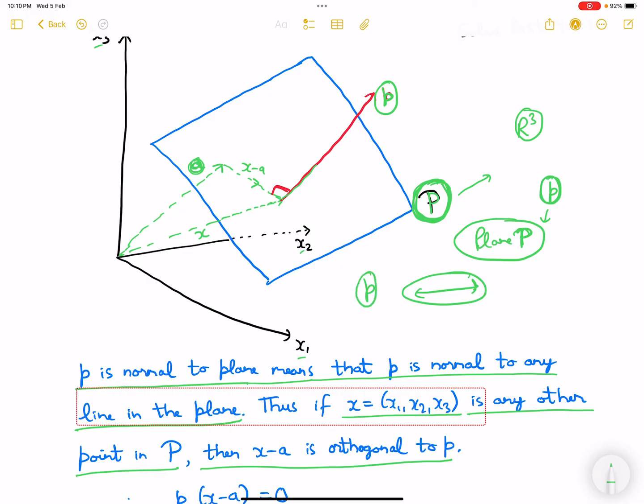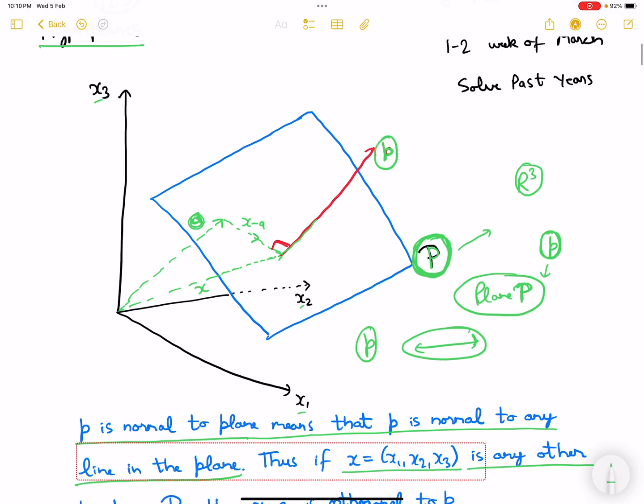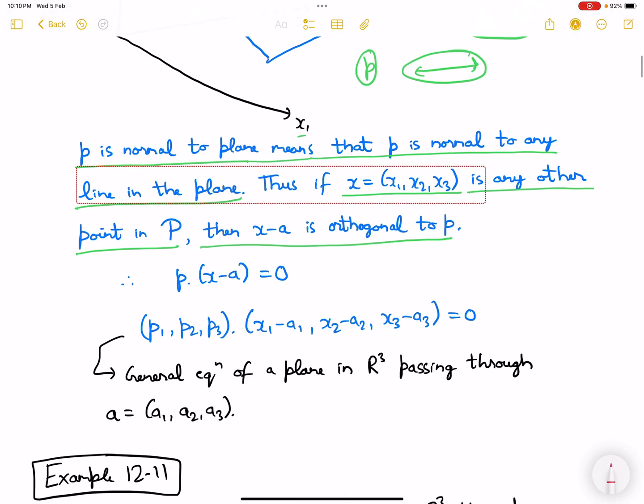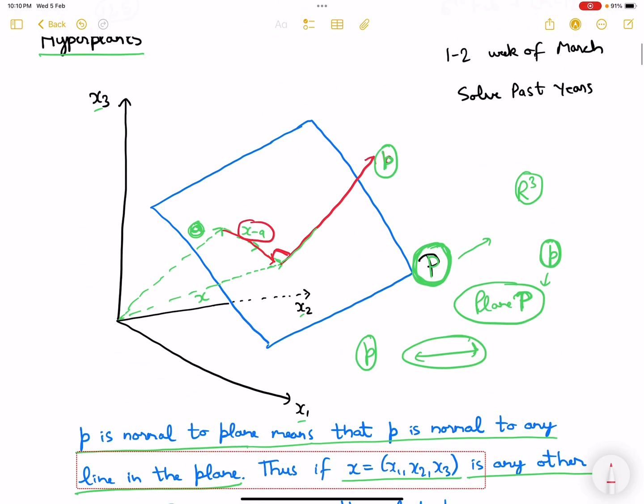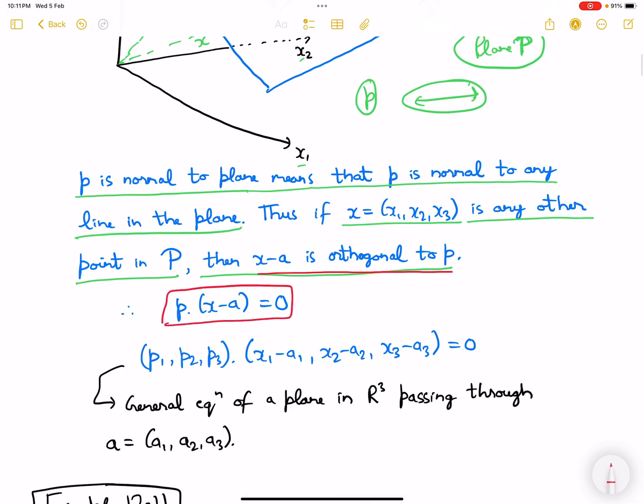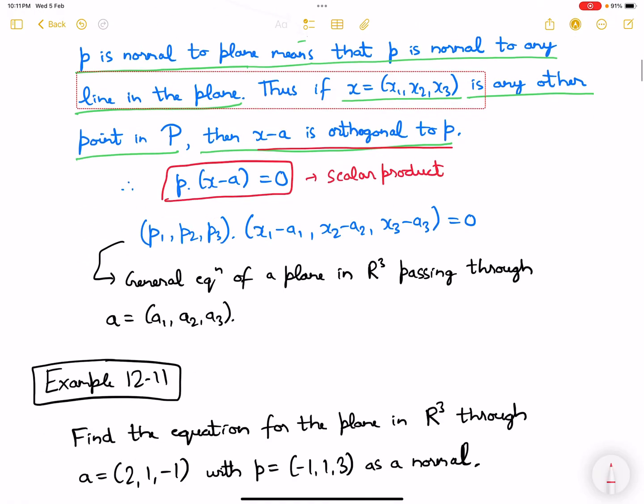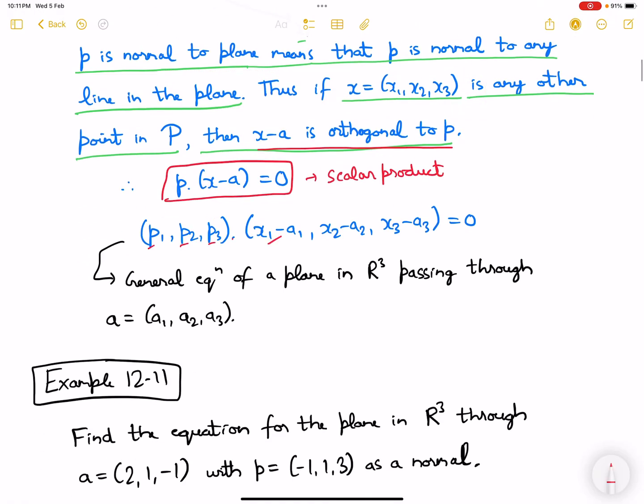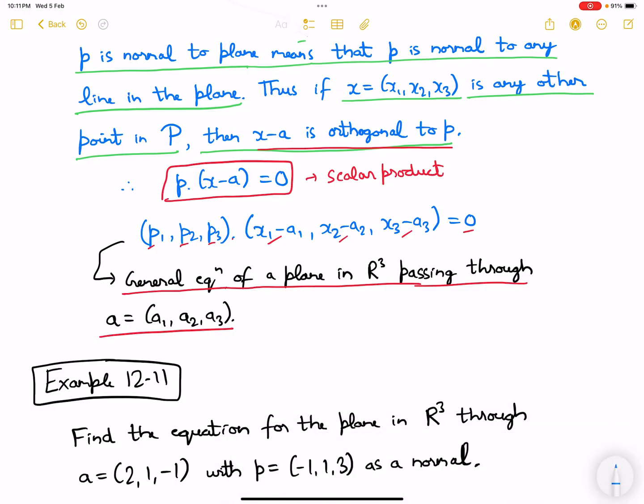If the vector p is orthogonal to plane P, then this vector p would be orthogonal to every line on the plane. Any line can be given as x minus a, so x minus a is also orthogonal to p. What we have is p dot (x minus a) equals zero. Since there are three components, we have p1, p2, p3 dot (x1 minus a1, x2 minus a2, x3 minus a3) equals zero. This is the general equation of a plane in R³ passing through the vector a.